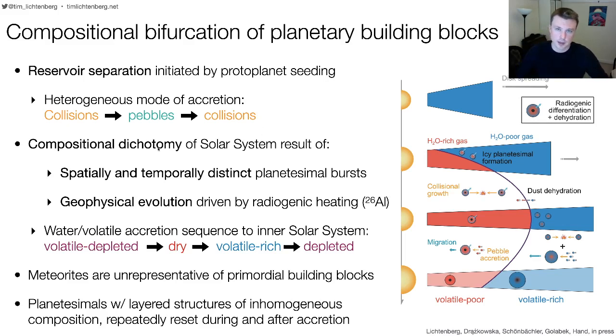The compositional dichotomy of a dry inner and wet outer solar system is the result in this case of a spatially and temporally distinct build up of planetesimal reservoirs in the accretion disk.